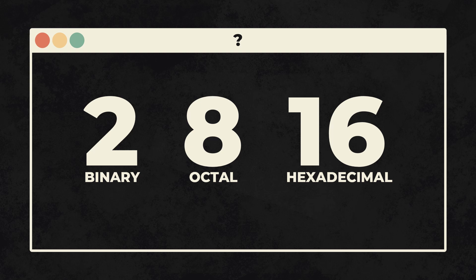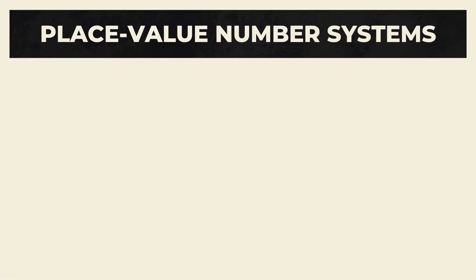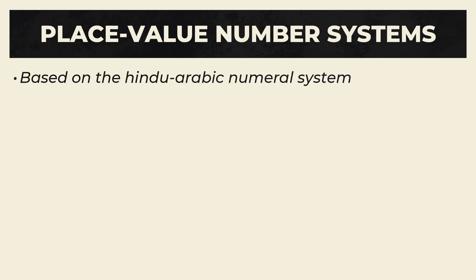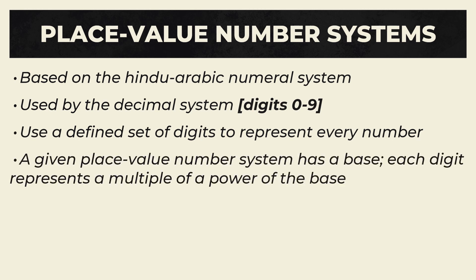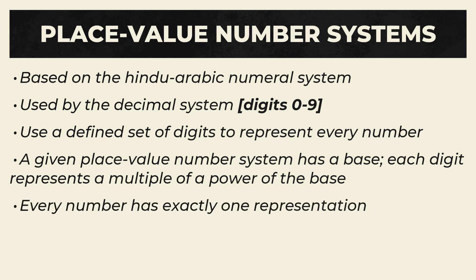Before we discuss binary, octal, and hexadecimal, we have to discuss place value number systems. These number systems are based off of the Hindu-Arabic numeral system, and is used by the current decimal system today. Essentially, place value number systems use a finite and defined amount of digits to represent all possible integers. This works by having a base, which in decimal's case is 10, and then having each digit represent a multiple of the power of that base. This has an advantage that each integer has exactly one representation, as opposed to systems like Roman numerals, where an integer can be represented in more than one way.